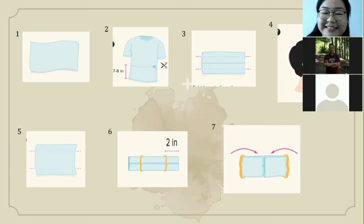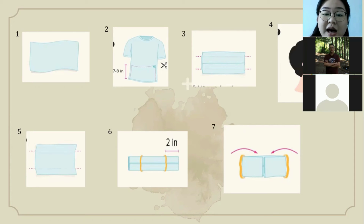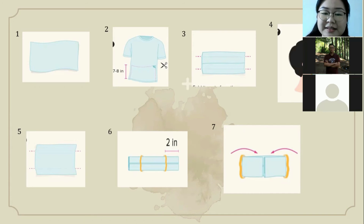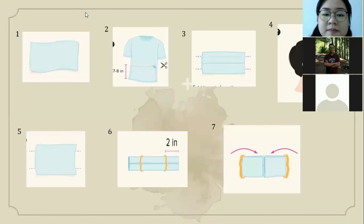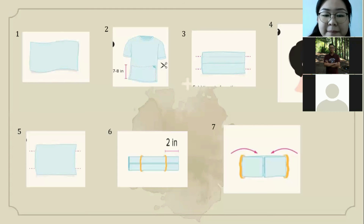Are you done? Good job! Now I want you to share the result of your discussion. I want group one to be the first presenter. A student from group one presents: Our procedure text is about how to make a face mask. Based on the picture, the correct order is: number two, one, five, three, six, seven, and lastly four. The materials are an old shirt, rubber bands, and scissors.